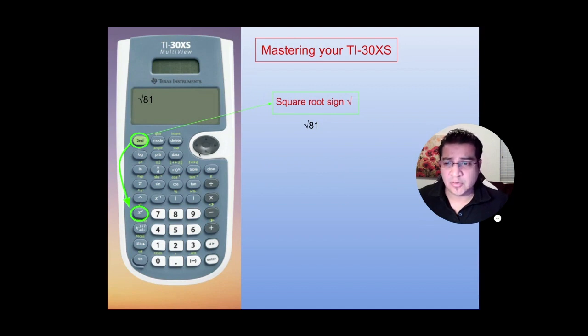Another function that you need to know is the square root. You activate it by clicking the second function, and then you go to square root of X square, and then you put the number. So like square root of 81 will be equals to 9.